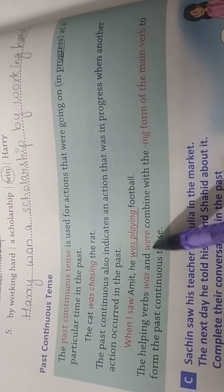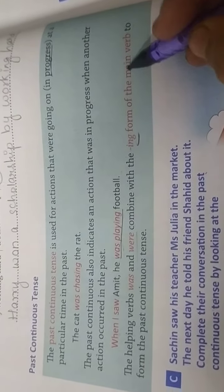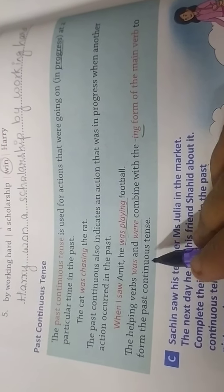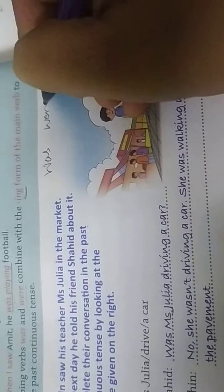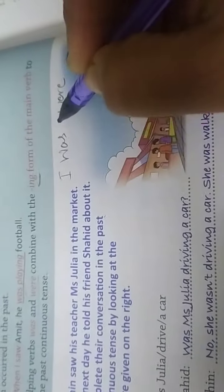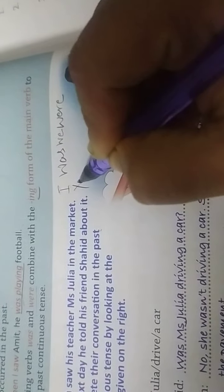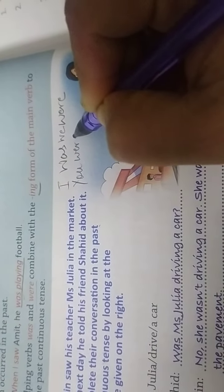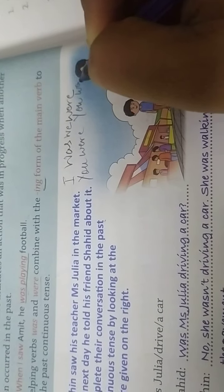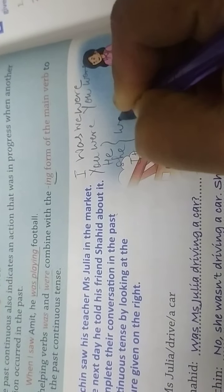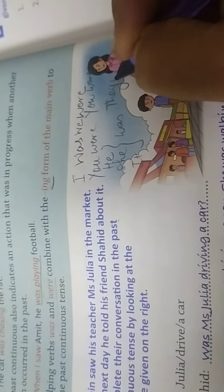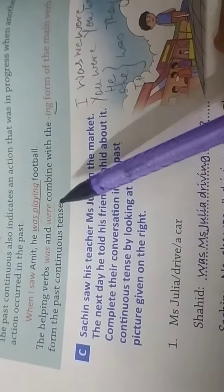The helping verbs 'was' and 'were' are combined with the -ing form of the main verb to form the past continuous tense. 'Was' and 'were' are used as follows: I was, we were, you were, he/she/it was, they were.